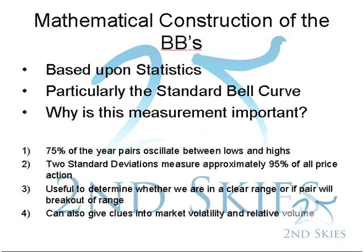Let's ask ourselves why and how this is important. Approximately 75% of the year, all pairs oscillate between lows and highs, or relative floors and ceilings. This is because the order books aren't generally skewed to one side or the other to overwhelmingly push the pair to the upside or downside. Therefore, pairs should range within a relative high and a low.